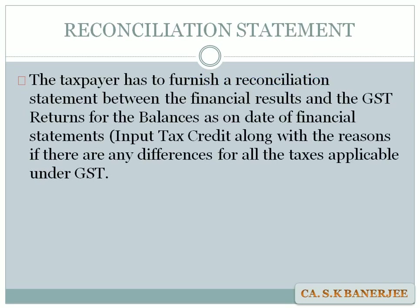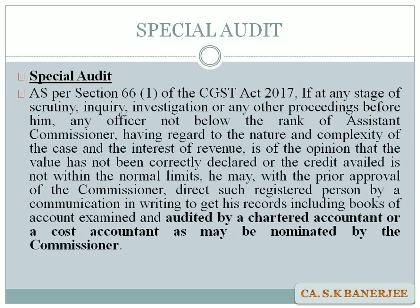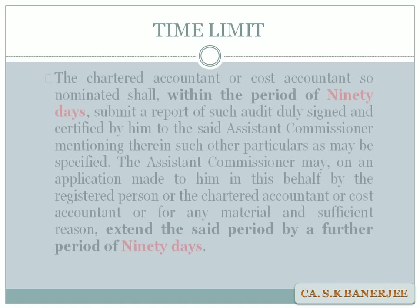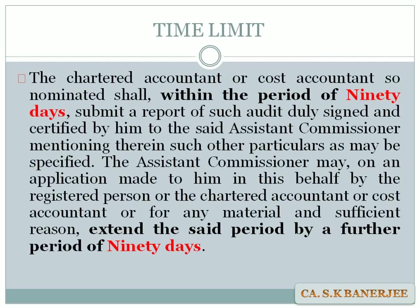Moving to the special audit under Section 66 of the CGST Act 2017 — if at any stage of a scrutiny, inquiry, investigation or any other proceeding, an officer not below the rank of Assistant Commissioner is of the opinion that the value declared or credit availed is not within limits or has been incorrectly declared, then such officer with prior approval of the Commissioner can direct the registered person in writing to get his records including books of accounts examined and audited by a CA or CMA nominated by the Commissioner.